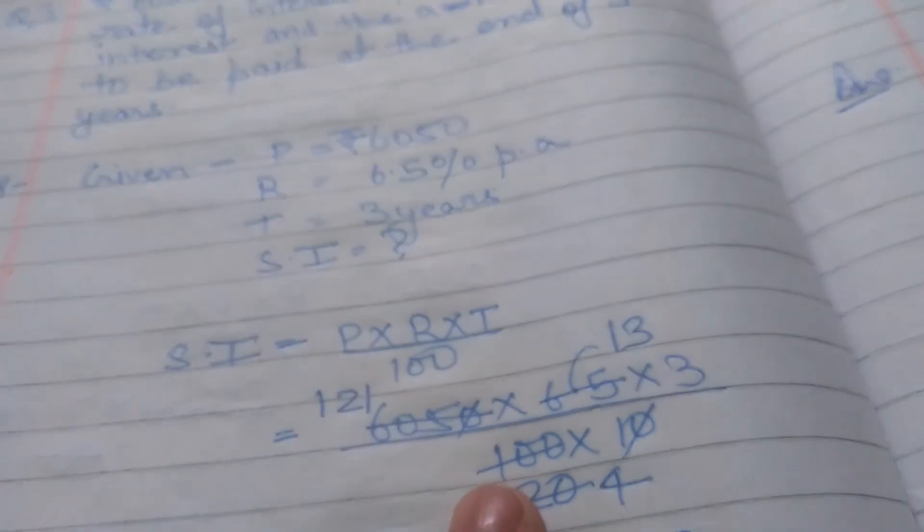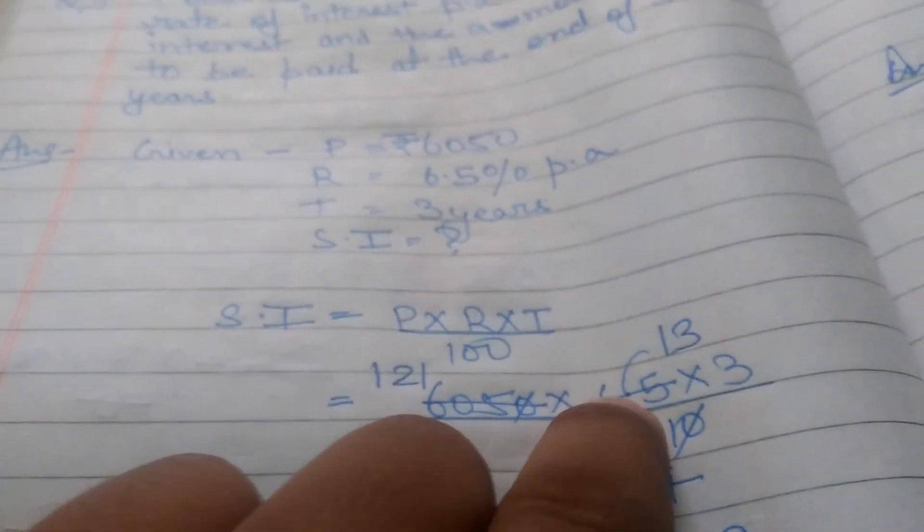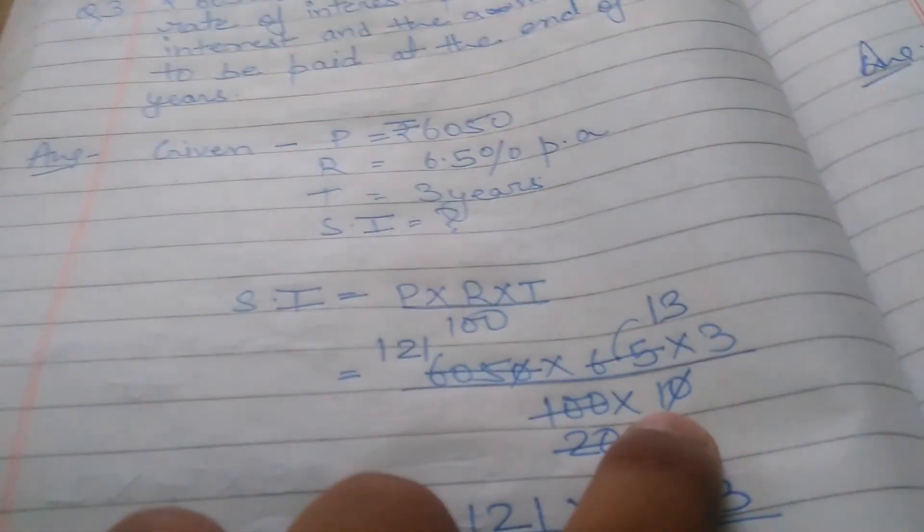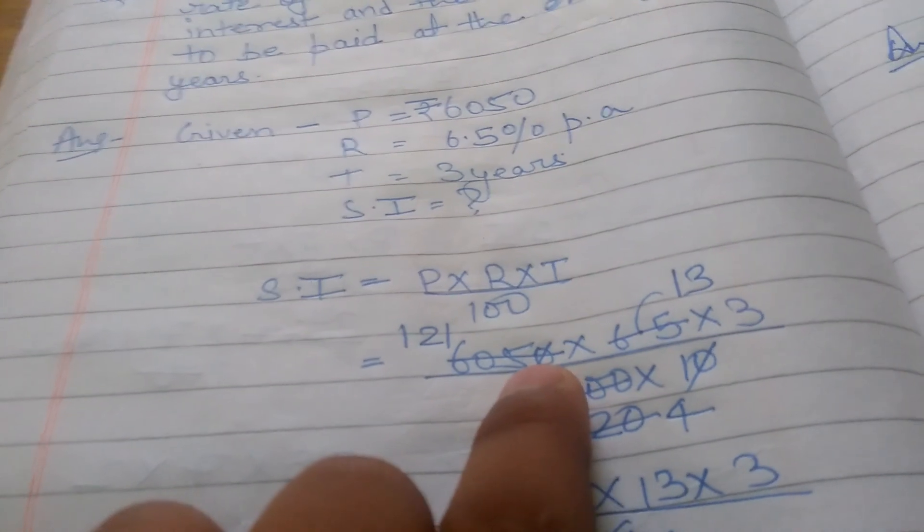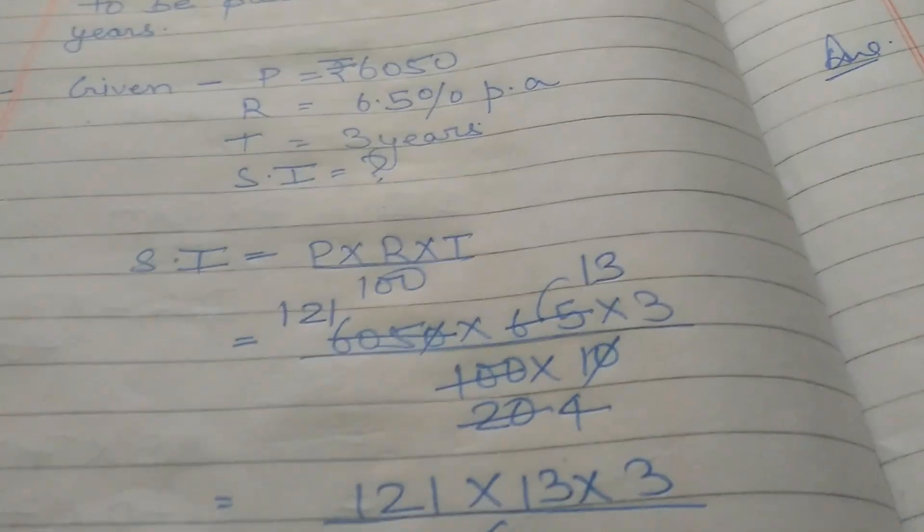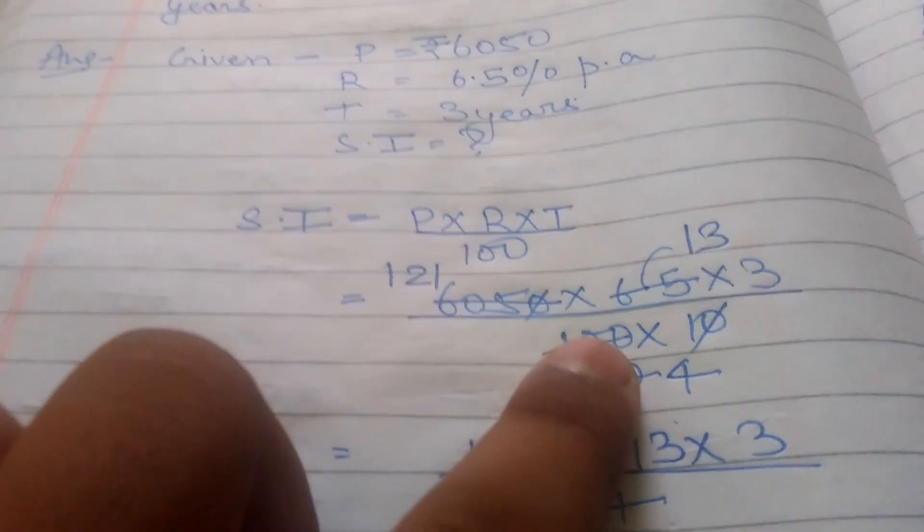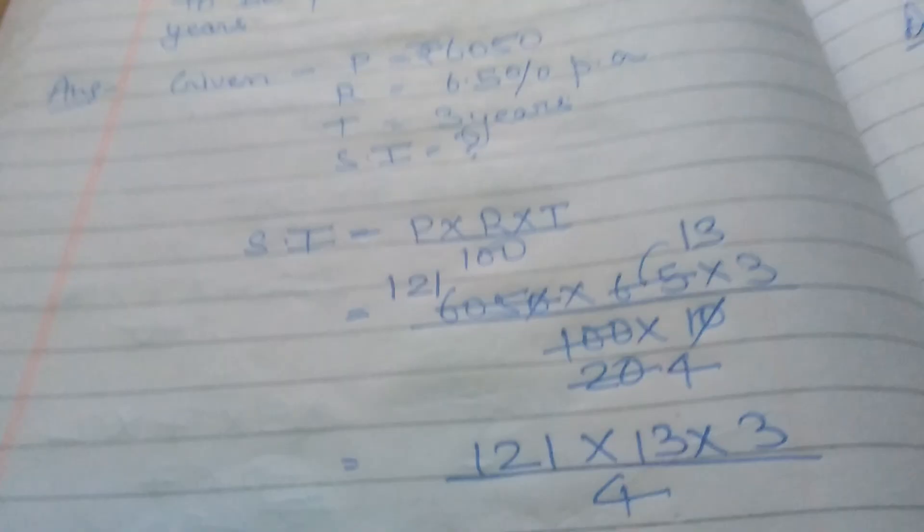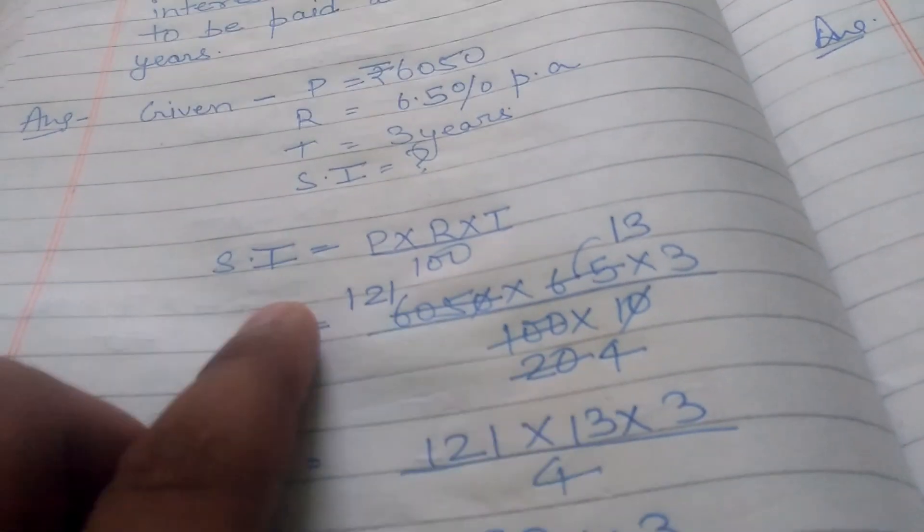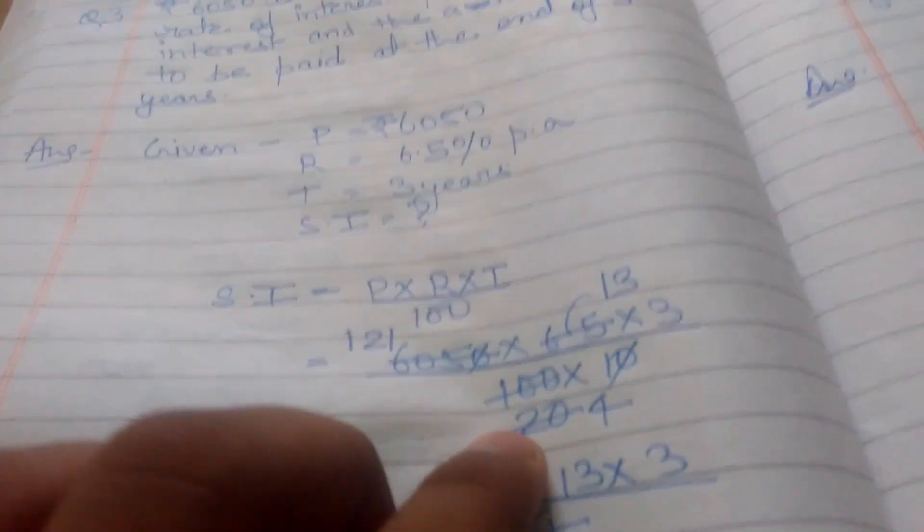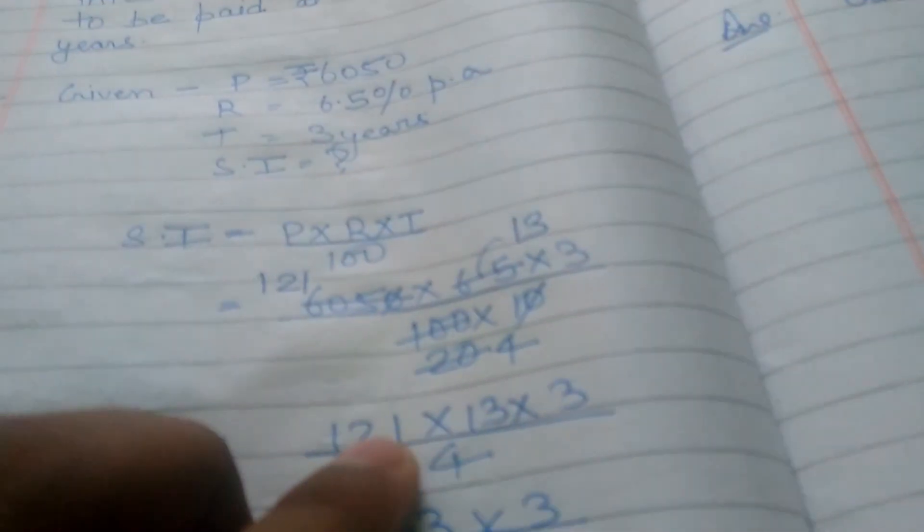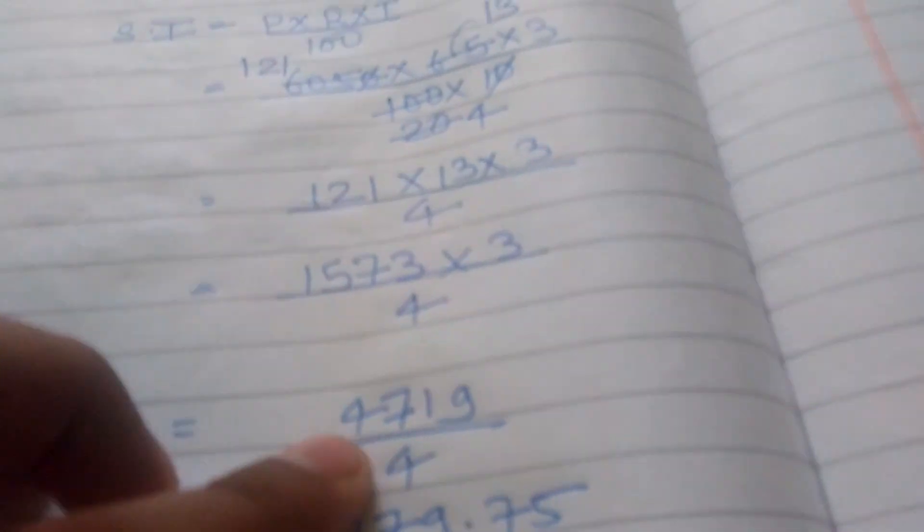We will solve it like this. First we will hide the decimal point - at the bottom there will be 10. This 0 will be cut with this 0. Then the left is 6,050 and 1,000. Then these two will be divided by 5. This will be 200 and this will be 121. Then 65 and 20 is divided by 5, this is 13 and this is 4. We will write this and solve it.